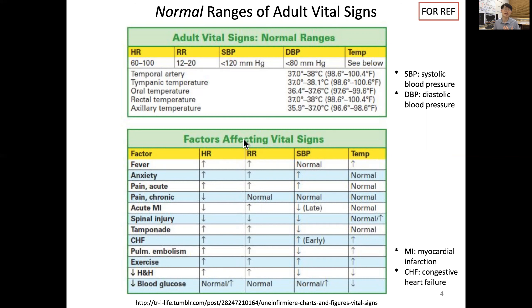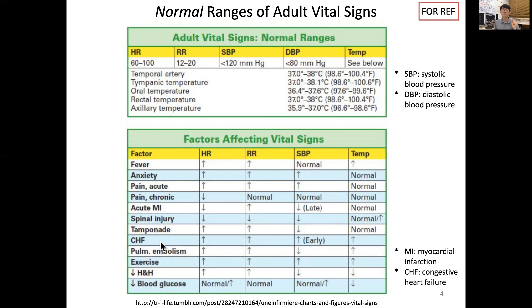These vital signs are important because they indicate specific conditions. For example, fever and anxiety cause heart rate, respiratory rate, and systolic blood pressure to rise. In acute myocardial infarction — a heart attack — the heart cannot beat well, so heart rate drops, breathing rate increases to compensate for low oxygen, and systolic blood pressure falls because cardiac function is compromised.